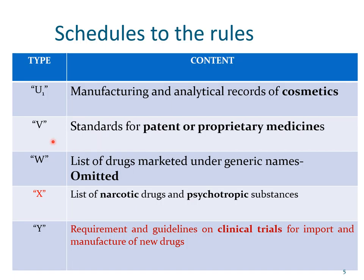Schedule U1 discusses the manufacturing and analytical record requirements for cosmetics. Schedule V2 discusses the standards for patent or proprietary medicines — those which are not official, which are new. Schedule W contains a list of drugs marketed under generic names, but that schedule is now outdated. Schedule X, another important schedule we have discussed again and again, is a list of narcotic drugs and psychotropic substances, which are also governed under a different act that we will discuss as we proceed.